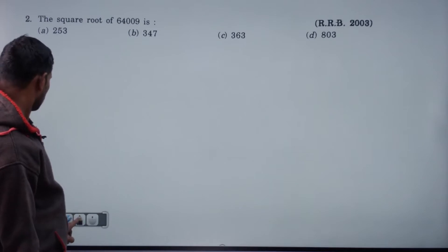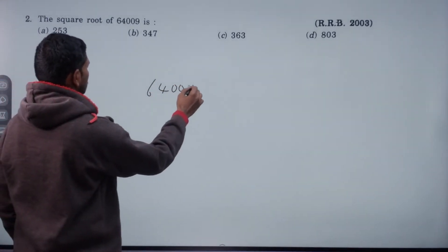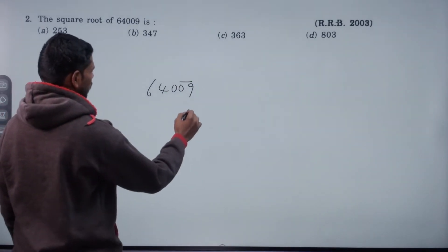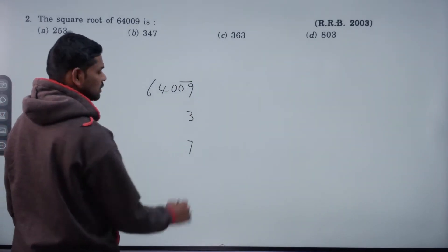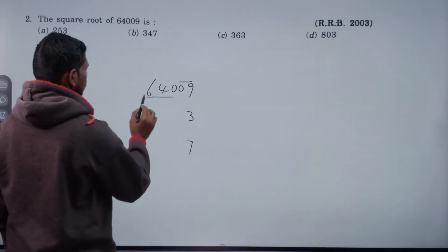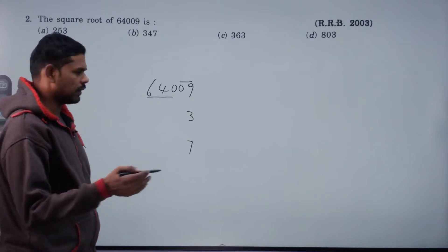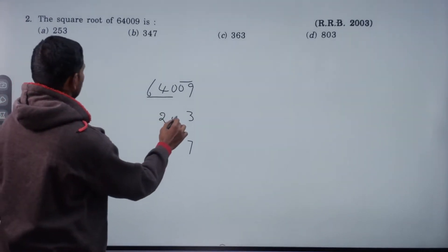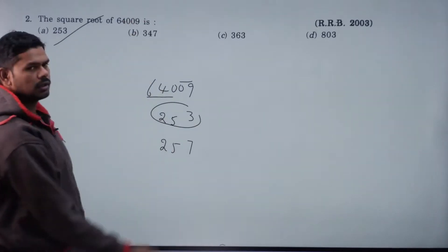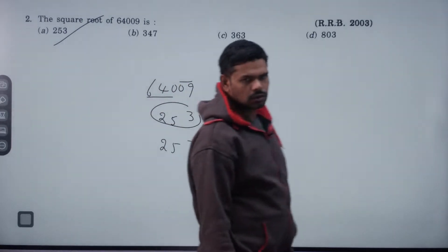We will get a little speed. Square root of 64009. In its units place, 9 is either 3 squared or 7 squared. 640 is equal. 640 is equal. 252 is equal. 625 is equal. Is it 253 or 257? The answer is 253.